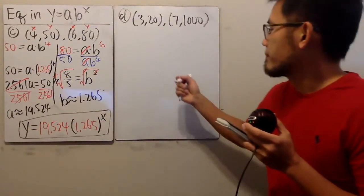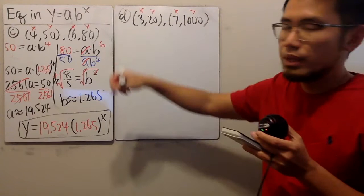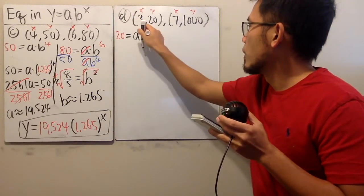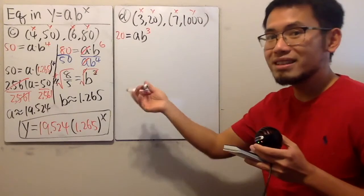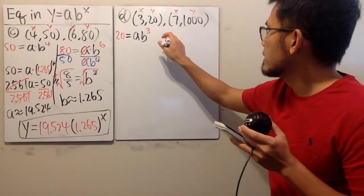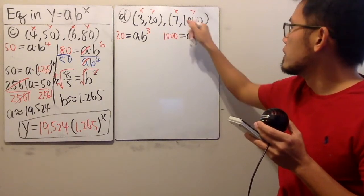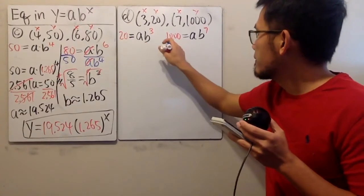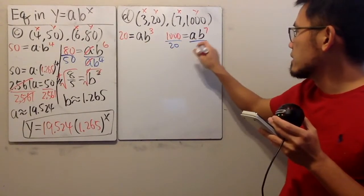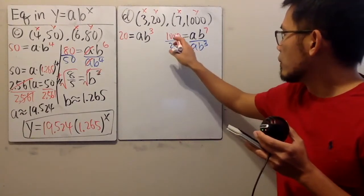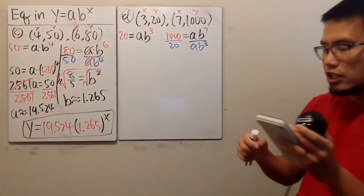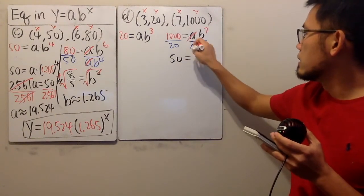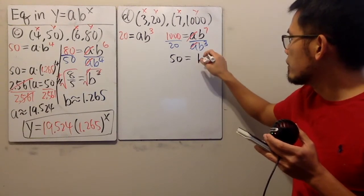Last one. x, y, x, y — put them into the equation. So we have 20 equals a times b to the third power, where x is 3. We don't know much about this, so we come to the second point: 1000 equals a times b to the 7th power. Dividing: 1000 divided by 20 is 50, the a's cancel, and b to the 7th over b to the 3rd is b to the 4th power.